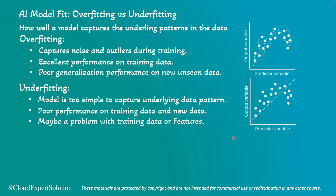This is an example of underfitting. The dotted line represents the model performance, and the model performance is not following the data pattern at all. To bridge this gap, we should come up with a model that provides balanced performance.